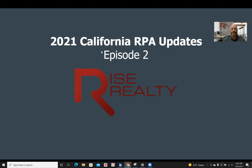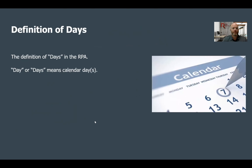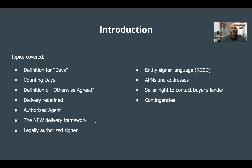We'll go ahead and roll into what we're covering today. We're going to cover: the definition of days, counting days, definition of otherwise agreed, delivery redefined — so the delivery method has changed, we definitely want to pay attention to this — the new delivery framework, the legally authorized signer pertaining to the RCSD form, entity signer language, APNs and addresses, seller right to contact buyer's lender which is going to be a new one, and contingencies.